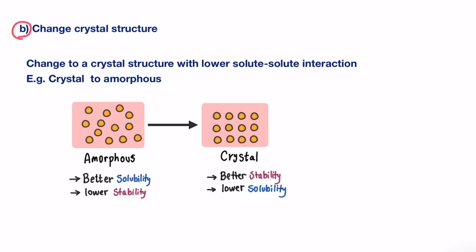Moving on to the second technique of improving dissolution by improving solubility, which is changing the crystal structure of a drug. In order to increase the solubility of a drug, we can not only play around with step three, but also we can change the energy required in step one by decreasing the solute-solute interaction. This can be done by changing the crystal structure of a drug.